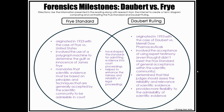What's the difference between the Frye standard and the Daubert ruling? Besides the dates — the Frye standard originated in 1923 and the Daubert ruling came many years later in 1993 — both cases have shaped the standards for admitting evidence into the courtroom. The Frye standard mandates that scientific evidence must be based on principles and techniques that are generally accepted by the scientific community in order to be admissible in court, and for a long time that held true.